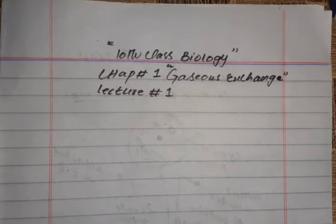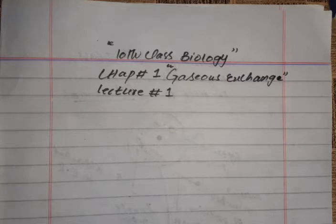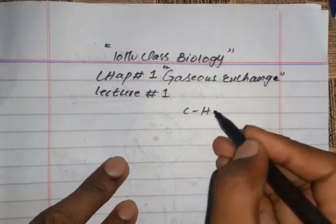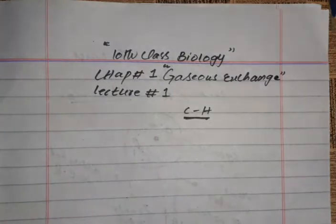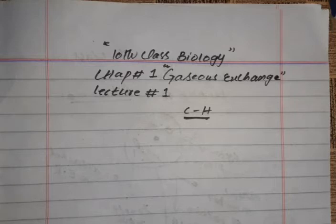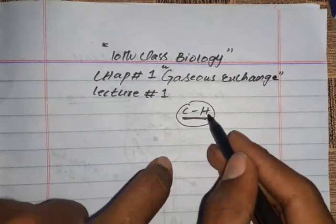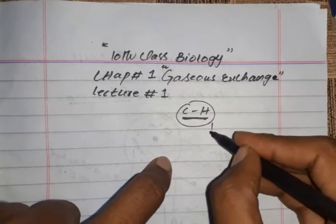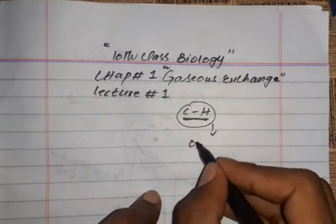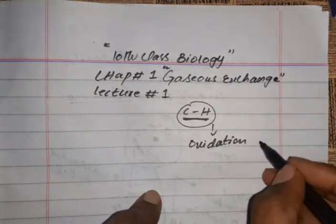As you have studied in 9th class, ATP energy is generated in cells, and that energy is generated from food. Cellular respiration is the process in which the carbon and hydrogen bonds in food are broken by oxidation-reduction reactions and the energy is transformed.